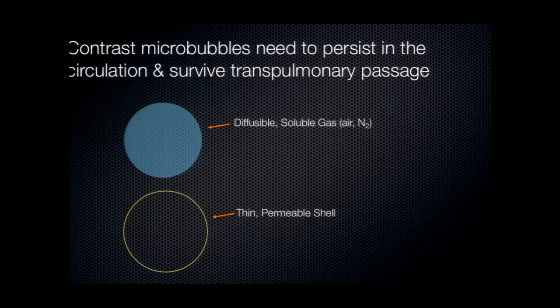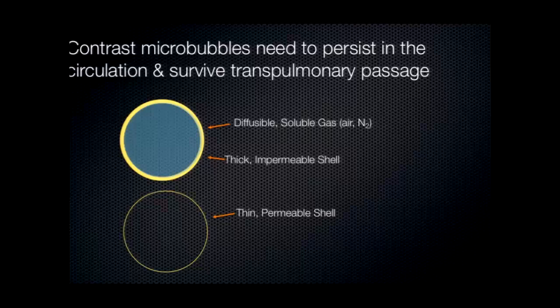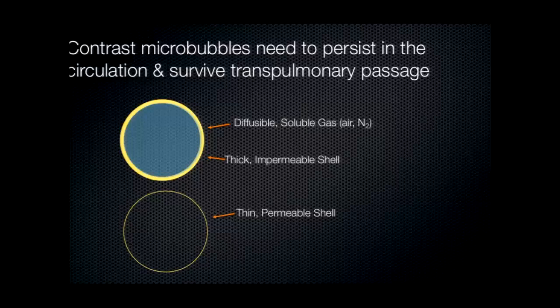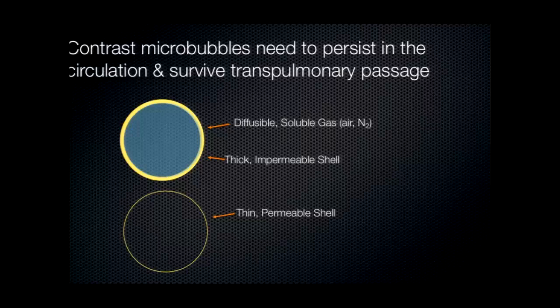Now, one of the key features of a commercial transpulmonary contrast agent is that clearly it has got to be able to persist in the circulation and survive transpulmonary passage. And essentially, manufacturers have taken two approaches to achieve this. If they've created a microbubble which has a diffusible, soluble gas, such as air or nitrogen within it, then what they've done is to wrap that bubble with a thick, impermeable shell. Now, this prevents the gas from diffusing outside the bubble, but does alter its acoustic properties because it makes the bubble stiff.